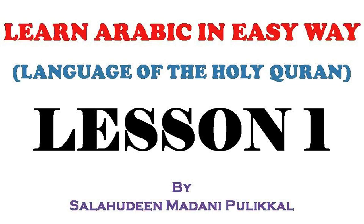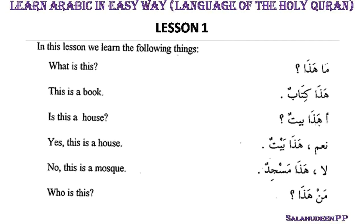First of all: 'Ma hada?' — What is this? 'Hadha kitabun' — This is a book. 'Hadha baytun' — This is a house. 'Hadha masjidun' — This is a mosque. 'Man hada?' — Who is this? From these six examples, we can note some important points.